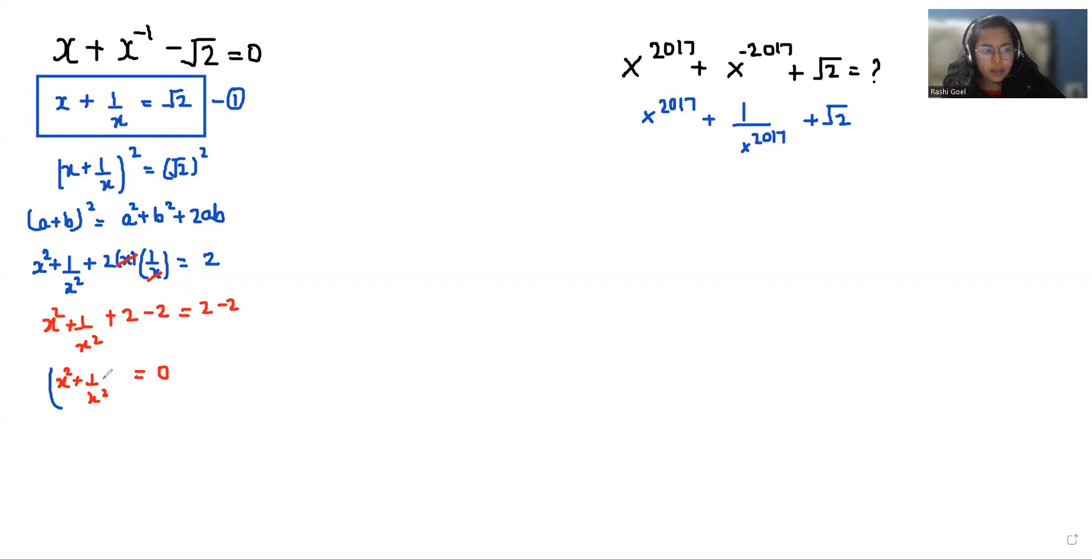Multiplying by x square, it becomes x power 4 plus 1 equals 0, so x power 4 equals minus 1.